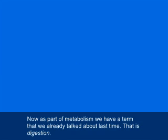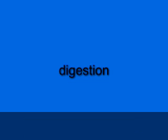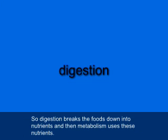As part of metabolism, we have a term we already talked about last time, and that is digestion. Digestion is the process by which complex foods are broken down into the nutrients that the body can use. Digestion breaks the foods down into nutrients, and then metabolism uses these nutrients.